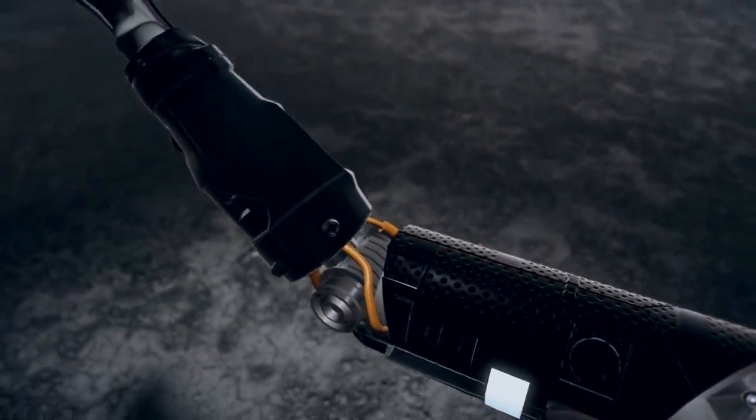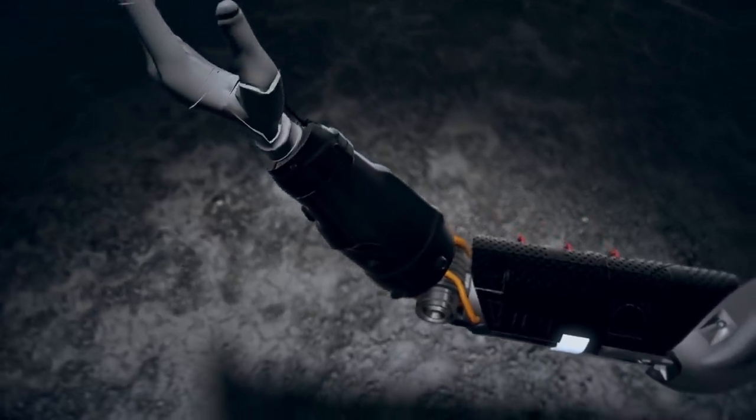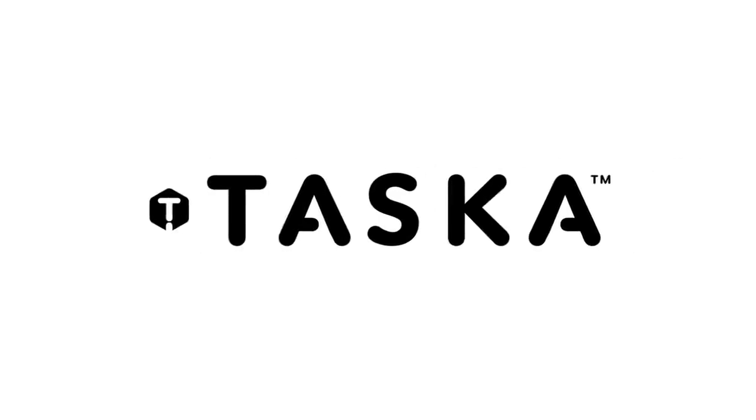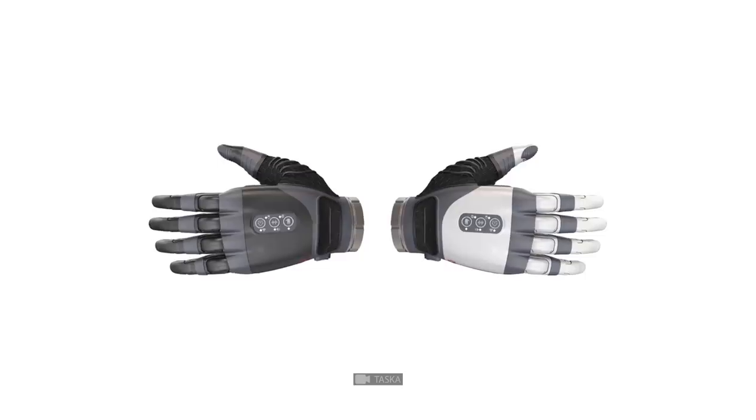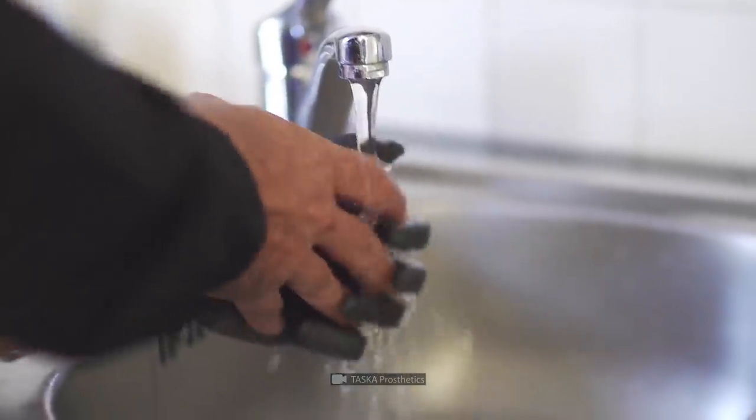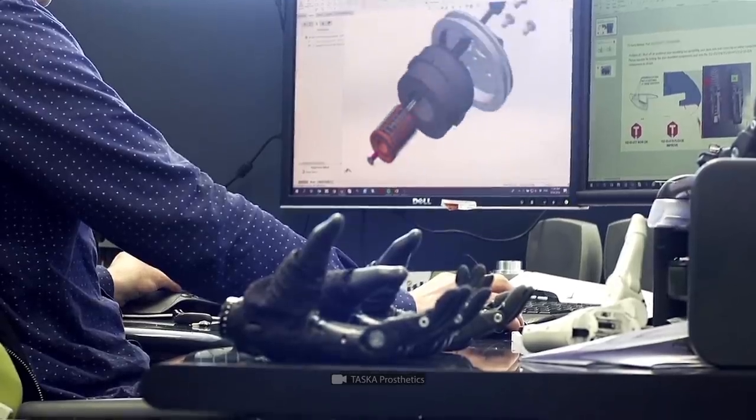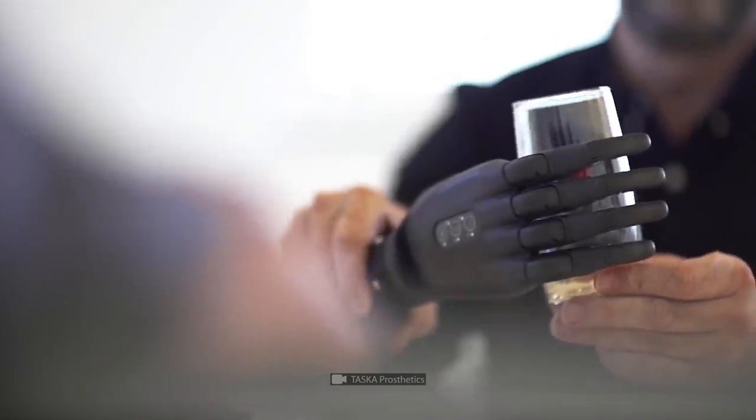Squeeze your fingers. Extend your hand for a handshake. Pat on the shoulder. For example, the task-a-hand bionic prosthesis allows you to peel potatoes, click a computer mouse, or hold cutlery.